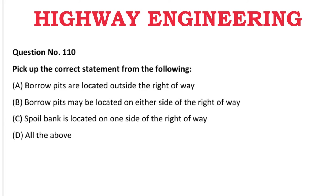Next question: Pick out the correct statement — A: barrow pits are located outside the right of way, B: barrow pits may be located on either side of the right of way, C: spoil bank is located on one side of the right of way, D: all the above. The correct answer is D, all the above.